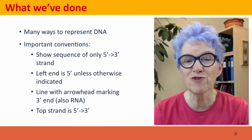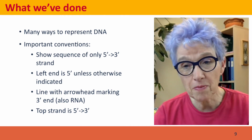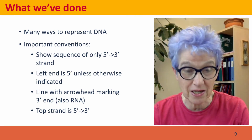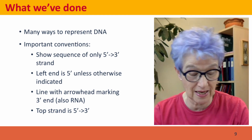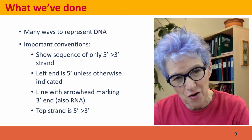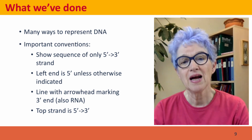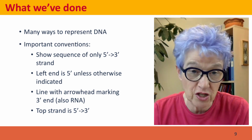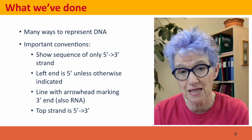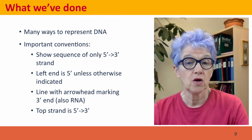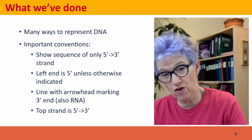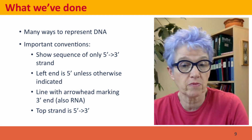So what have we done? We've talked about different ways to represent DNA and why we need to have ways to represent DNA. Unlike people who study mice or flowers, we can't see it at all. So we have important conventions — we can represent DNA by something as simple as a line, but if we're drawing a line, it represents DNA running in the 5 prime to 3 prime direction.